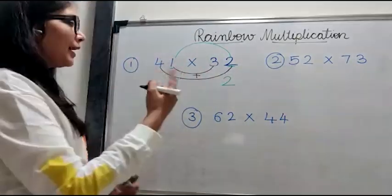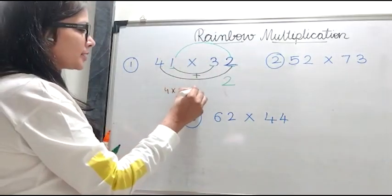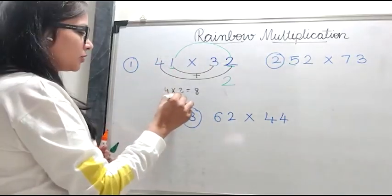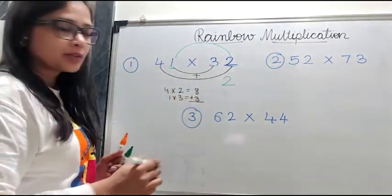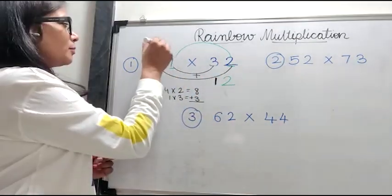So let's multiply and add up this both. Four twos, that is four twos is eight. And one threes is three. Eight plus three is 11. So I write my one over here and I carry over my one.